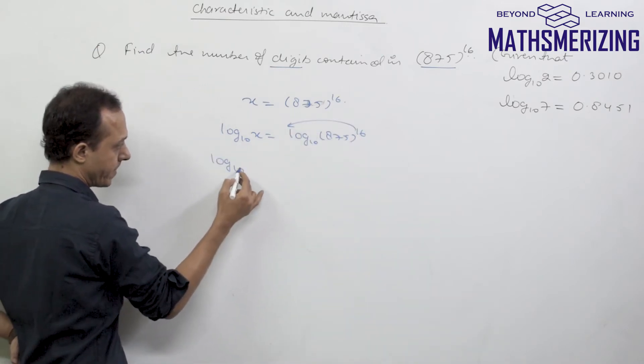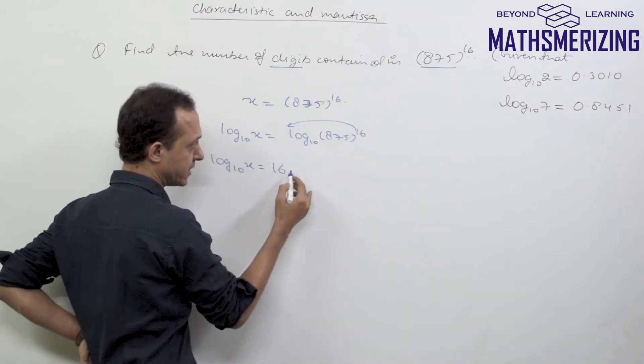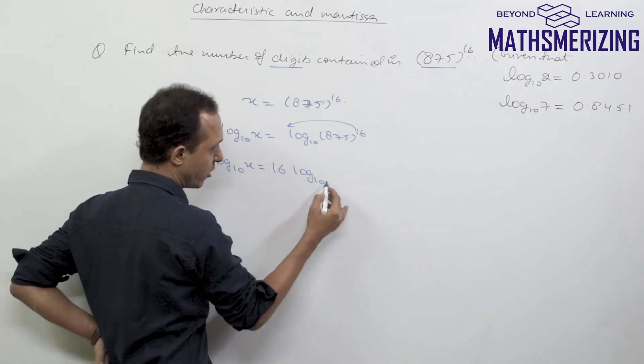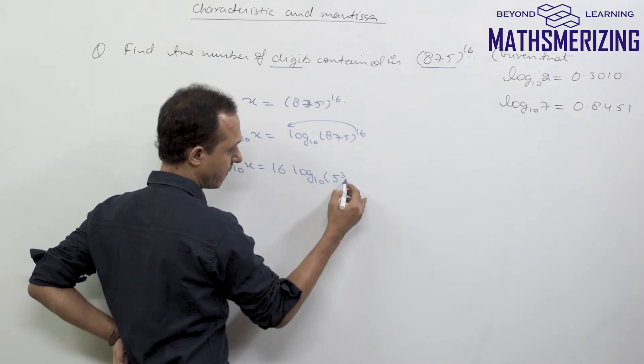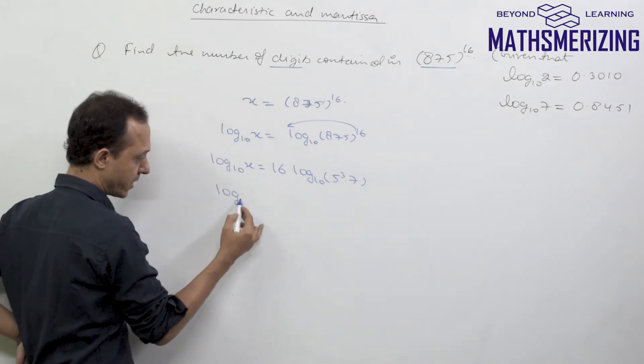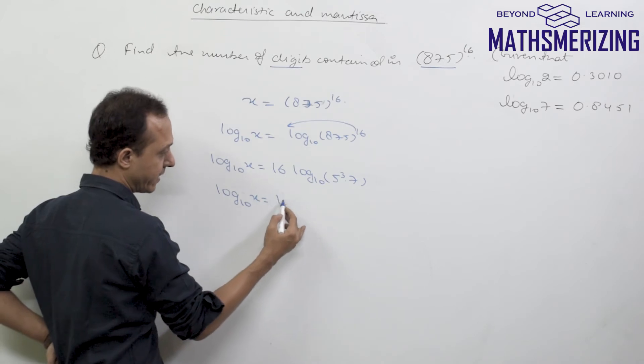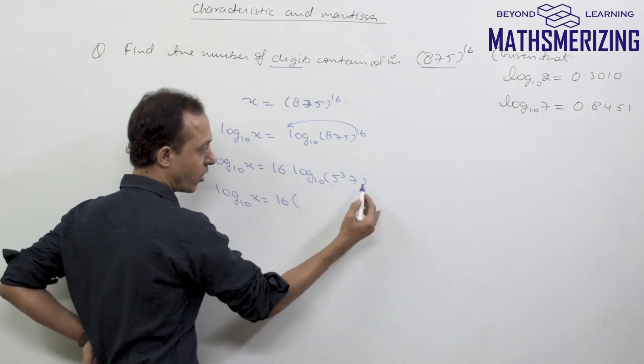I'll take this power out, so I'll write this as log X equals 16 times log of 5 cubed times 7. I can write it as log X base 10 equals 16 times log of 5 cubed plus log of 7.